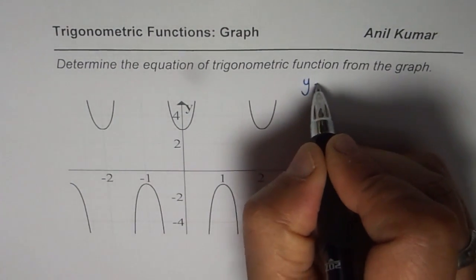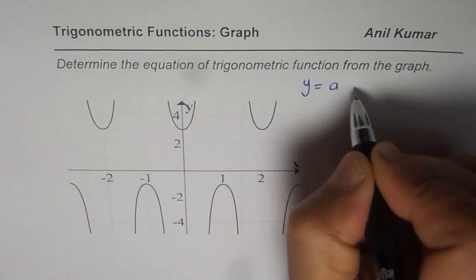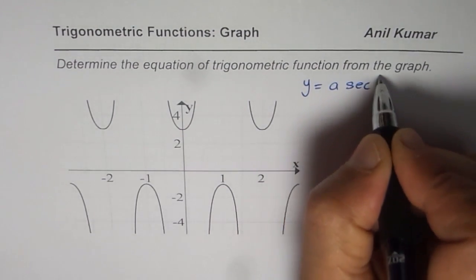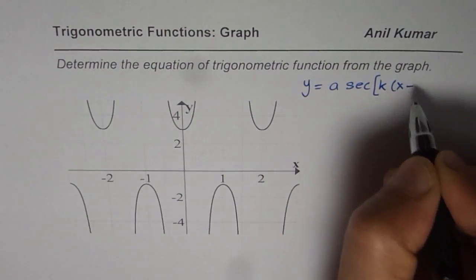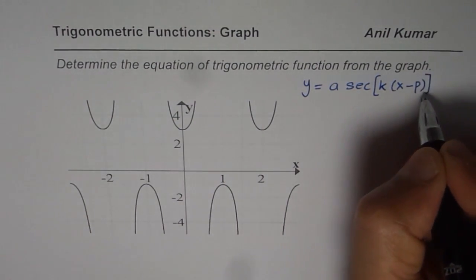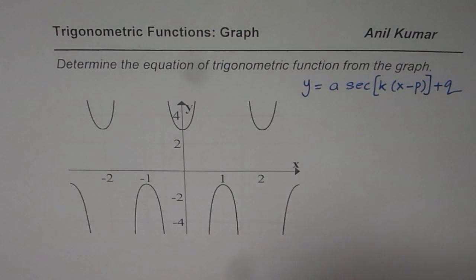How are we going to do that? So let's write a general equation first. We can write y = a sec[k(x - p)] + q. So that is a general transformed equation for a secant function.